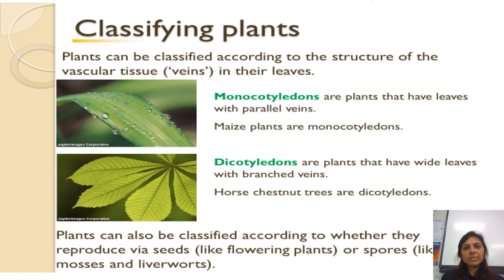Further classification of plants can be done using the vascular tissue, which is the veins in the plant — these lines here. These leaves are monocotyledon because the leaf has parallel veins; you can see these lines going straight downwards.